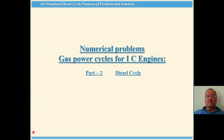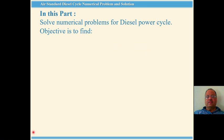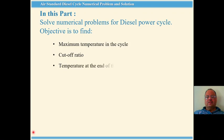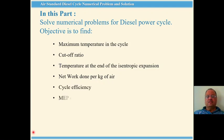Hello, this is Part 2 of the series of lectures on numerical problems for gas power cycles for IC engines. In this part we will solve a problem based on the diesel cycle with the objective of finding the maximum temperature in the cycle, cutoff ratio, temperature at the end of isentropic expansion, net work done per kg of air, thermal efficiency, and mean effective pressure. We will calculate these six parameters in two sessions, three parameters each.